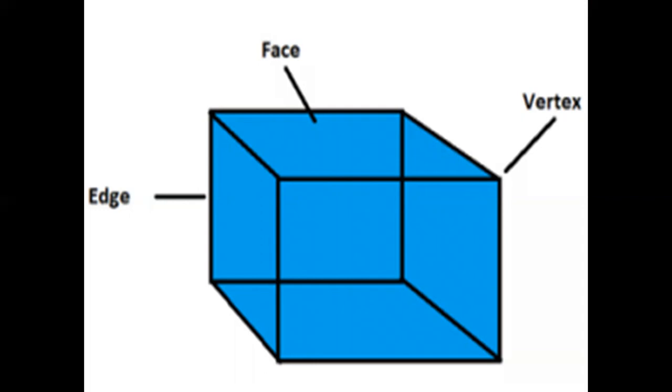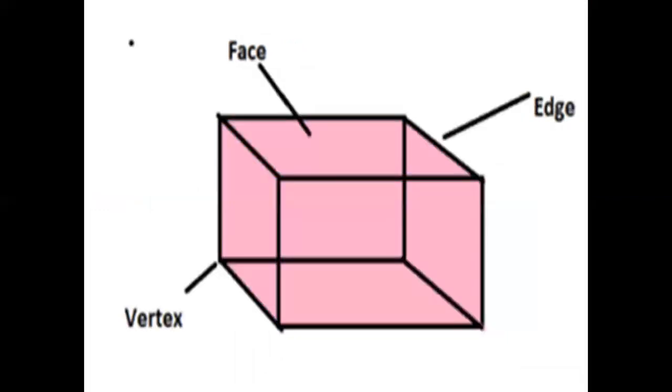Next, cuboid. A cuboid, length, breadth and height are different. It has 6 faces, 12 edges and 8 vertices. A common object with this shape, book, refrigerator, box.